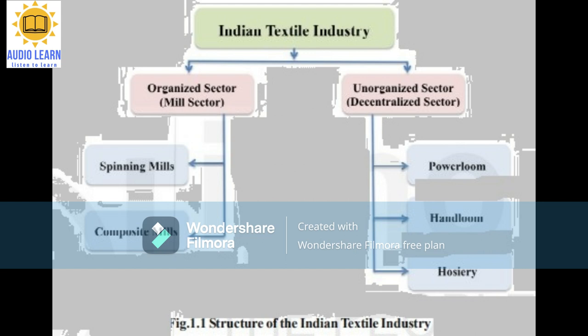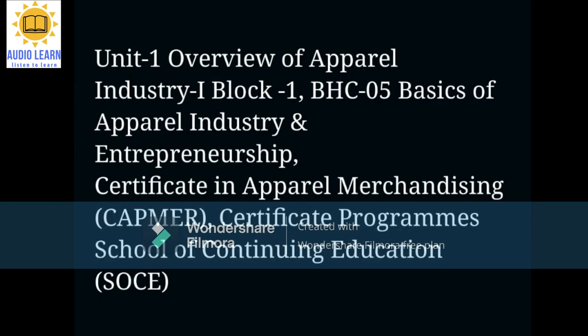Handcrafted techniques perfected over hundreds of years coexist with the latest technology and machinery. It is one of the few industries that encompasses the entire supply chain, from diverse fibers to a large product base with substantial value addition at each stage. The varied activities in the textile industry include the production of natural raw materials such as cotton, jute, silk and wool, as well as synthetic filament and spun yarn. In addition, an extensive range of finished products is made. It is important to note that India is the largest producer of jute and the second largest producer of silk, cotton and man-made fiber and filament, globally.